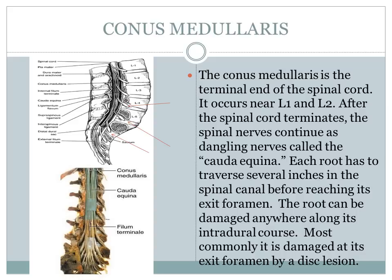Unlike cervical spine nerve roots, the lumbar spine nerve roots can be damaged anywhere along their intradural course from the spinal cord all the way down to the neuroforamen where they exit the spinal column. Most commonly these nerve roots are damaged at the exit foramen by a disc lesion, but they can be injured at other points throughout their course down the spinal column.